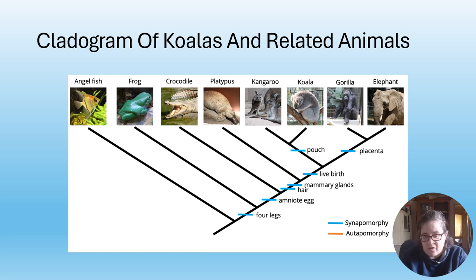Koalas are not placental. They are mammals because they have mammary glands. Live birth, yes - but they live in pouches. That's the cladogram and where some related animals fit in.